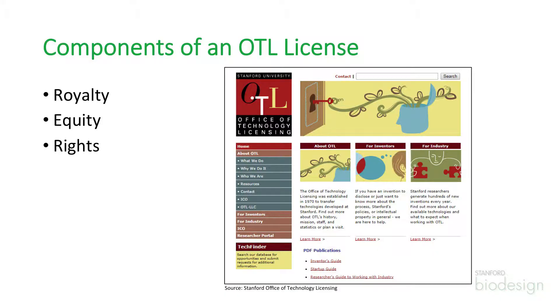Most technology transfer office licenses are probably of similar flavors and they really boil down to three components: there's a royalty component, there's an equity component, and there's the rights of the patent in terms of exclusivity and term. Those are all different levers that one can pull or use depending on the technology.